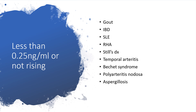If the value is still less than 0.25 nanograms per mL or not rising, you could still be worried about gout, inflammatory bowel disease — we know that to be Crohn's disease and ulcerative colitis — systemic lupus erythematosus, rheumatoid arthritis, Still's disease, temporal arteritis, and in other words autoimmune diseases, Behçet's syndrome, polyarteritis nodosa, and aspergillosis.